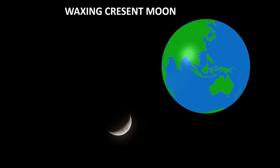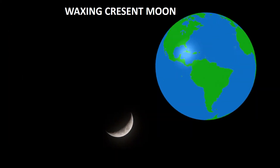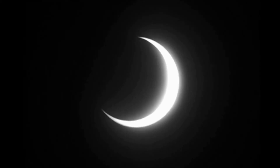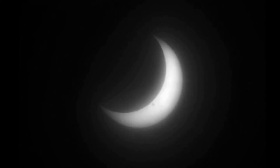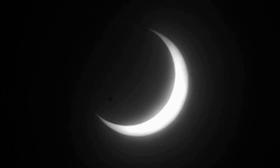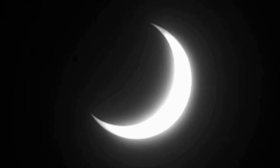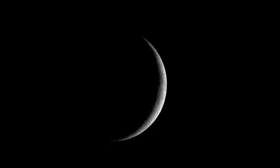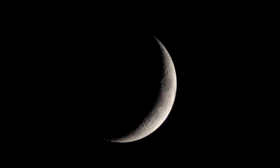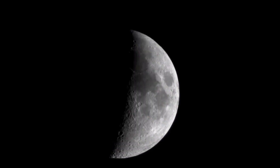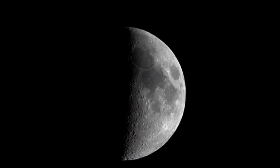Waxing Crescent Moon: The moment a thin sliver of the Moon becomes visible after New Moon is the beginning of the phase — the Waxing Crescent Moon. The Moon looks like a crescent, and the crescent increases or waxes in size from one day to the next.